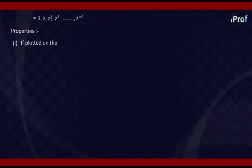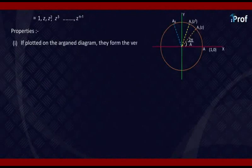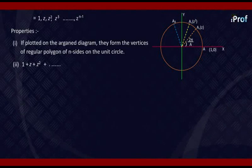Note that if we plot these points on the Argand diagram, they form the vertices of a regular polygon of n sides on the unit circle. That is the first property. The second property is their sum: 1 + z + z² + ... + z^(n-1) = 0, because this forms a geometric series that can easily be proven to equal 0.